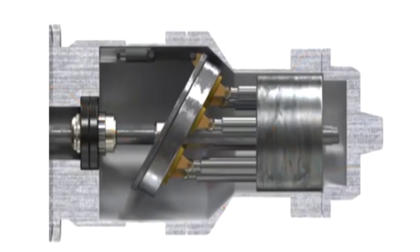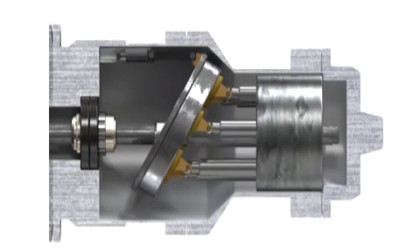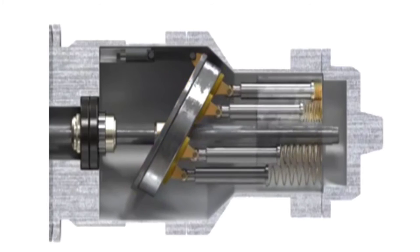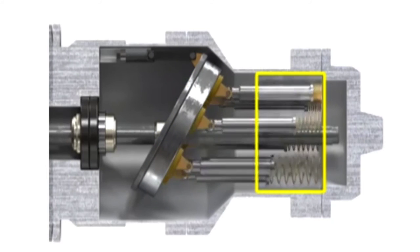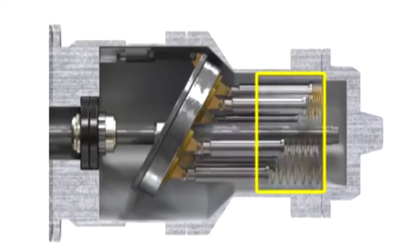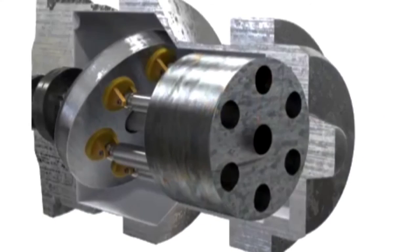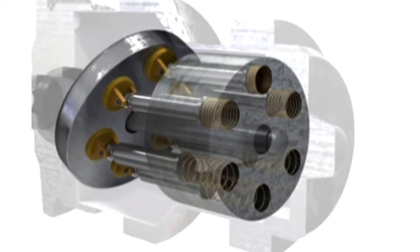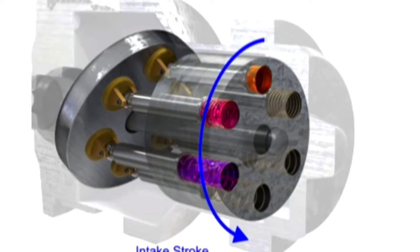As the shaft rotates, the pistons move against the swash plate, causing them to reciprocate within the piston block. The pistons create a vacuum that forces fluid in during half a revolution and expels fluid during the other half.